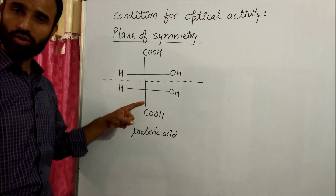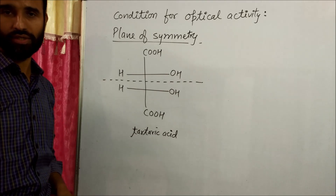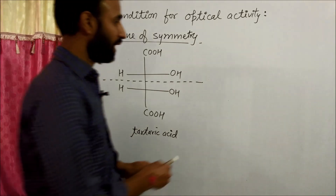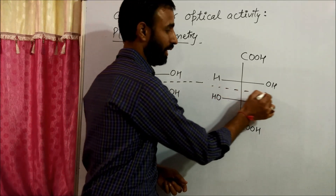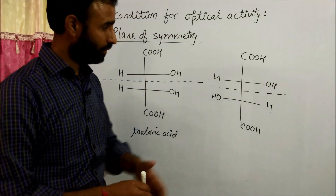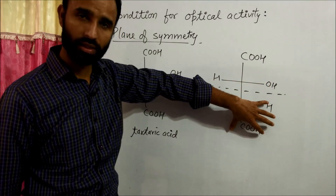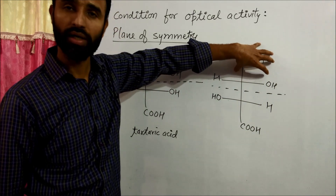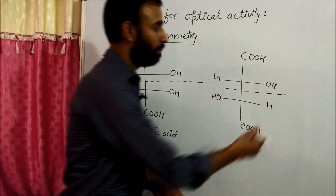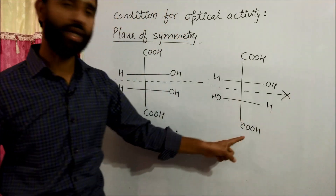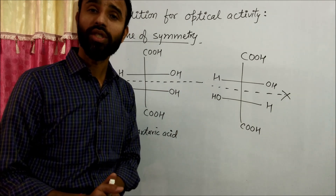A molecule which has a plane of symmetry is an optically inactive compound — it cannot rotate the plane polarized light. But if we write tartaric acid such that it has no plane of symmetry, because if we draw the plane, the OHH part of the molecule is not equivalent to the other part, then there is no plane of symmetry, and it is an optically active compound because it has no symmetry.